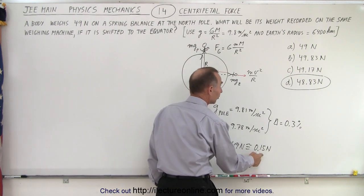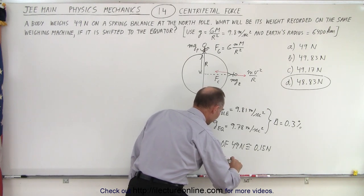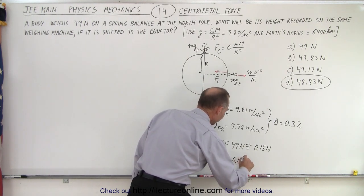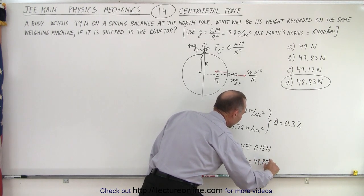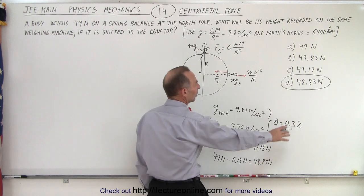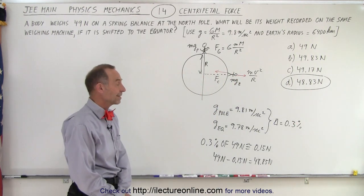And that means, if you subtract 0.15 newtons from 49 newtons, so if you take 49 newtons and subtract 0.15 newtons, you get 48.85 newtons. And since it's just, of course, an approximate calculation, you can see that you end up very, very closely to the correct answer, D.